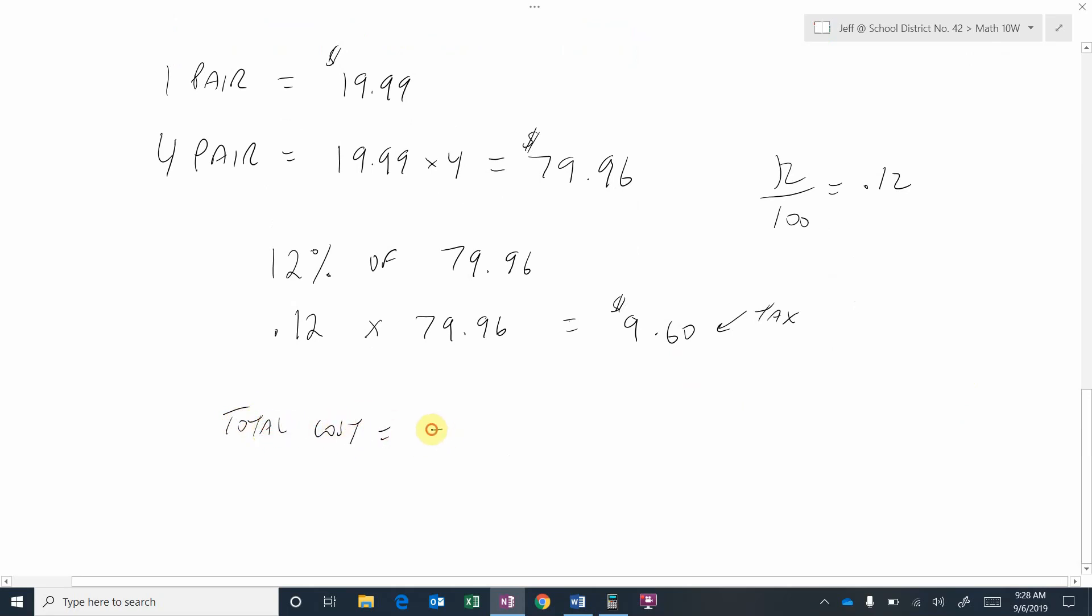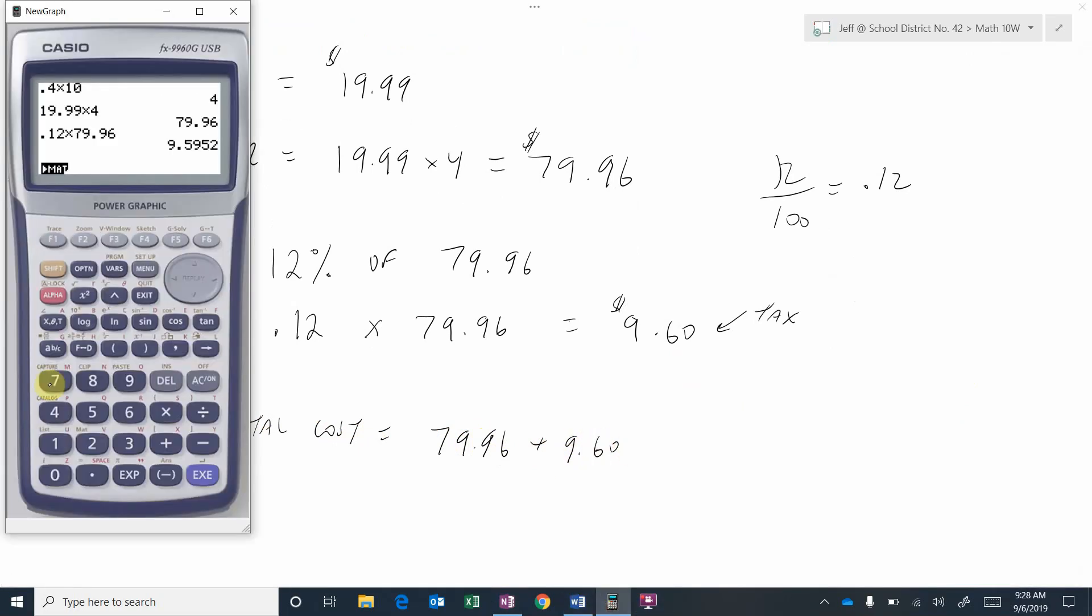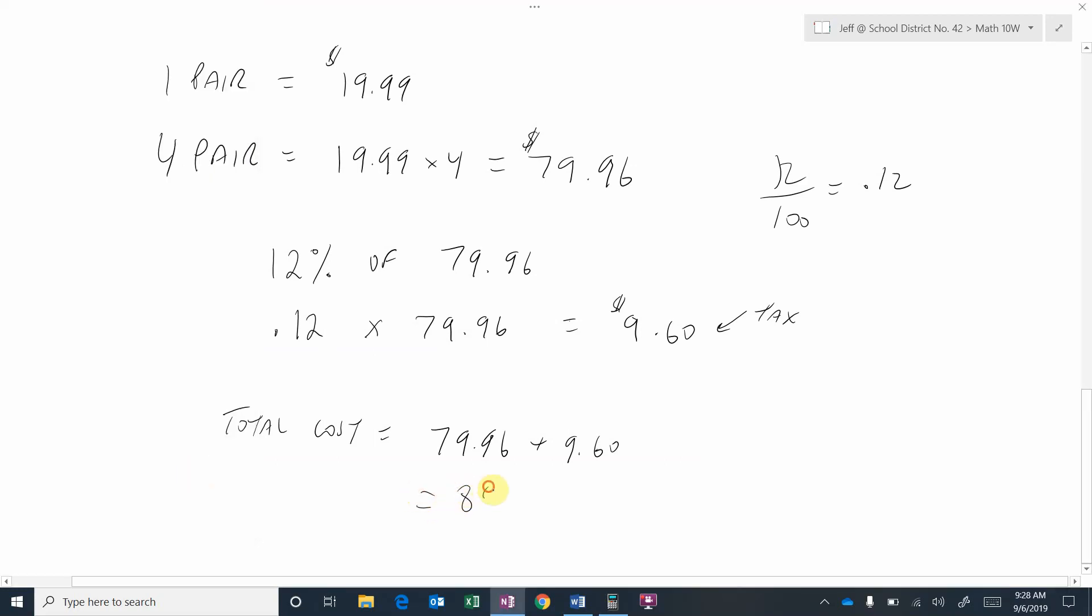And so the total cost is going to be $79.96 plus the nine dollars and sixty cents. So $79.96 plus $9.60 for a grand total of $89.56. So that would be the total cost of the four pairs of gloves including the tax.